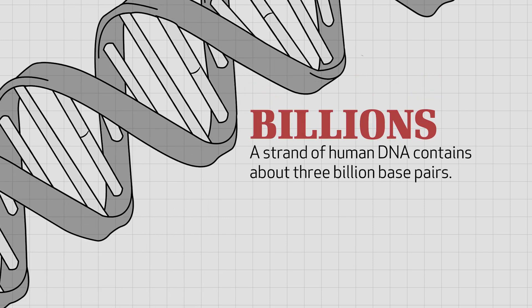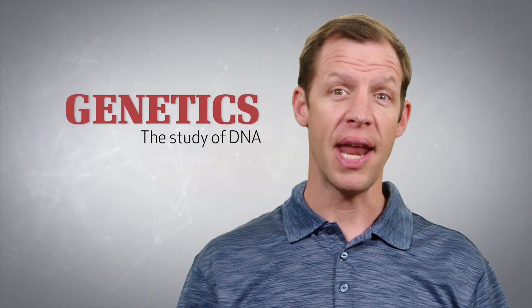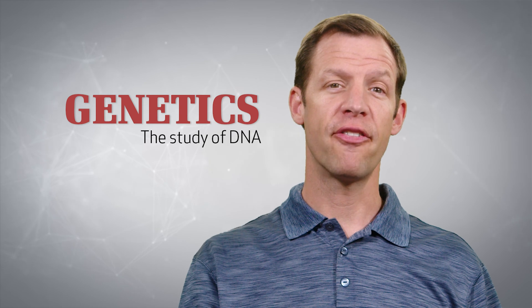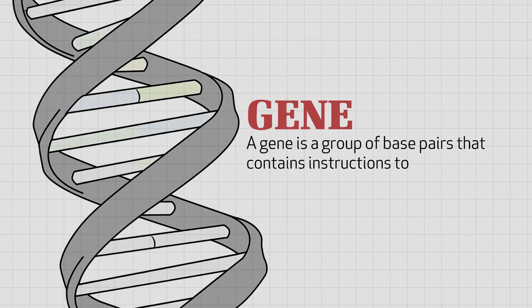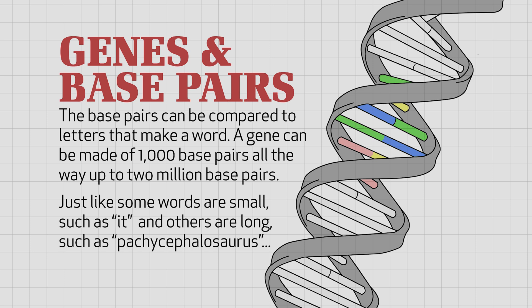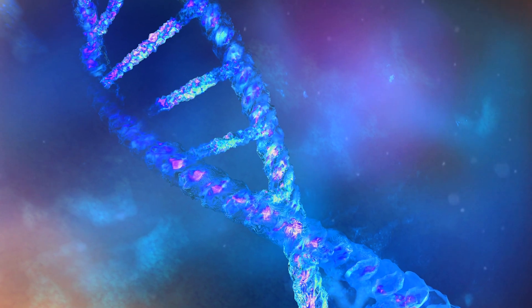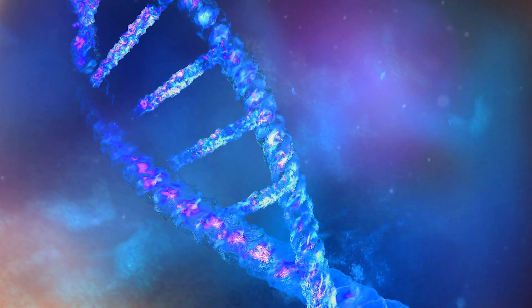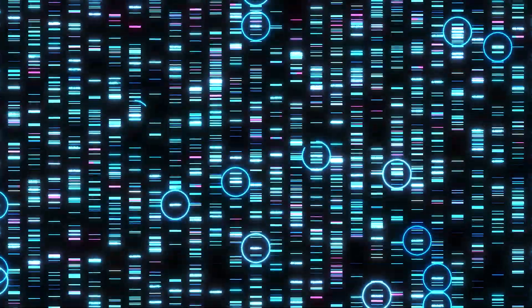A strand of human DNA contains about three billion base pairs. You may know that the study of DNA is called genetics, named after a DNA feature known as a gene. A gene is a group of base pairs that contain instructions to make one basic trait. It can be compared to a word, and the base pairs can be compared to letters that make up the word. A gene can be made up of a thousand base pairs all the way up to two million base pairs — just like some words are small, such as 'it,' and other words are long, like 'pachycephalosaurus.' DNA can actually code information like words, and that information is a language.